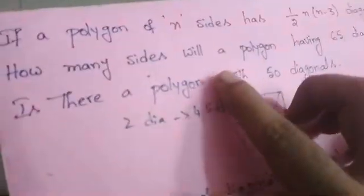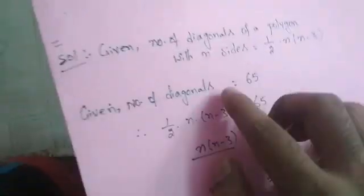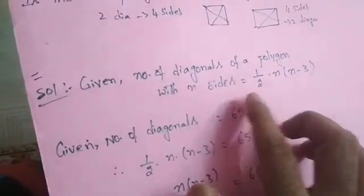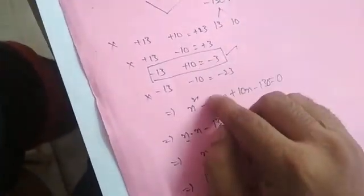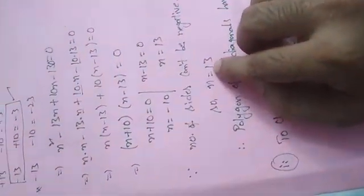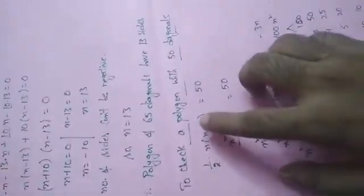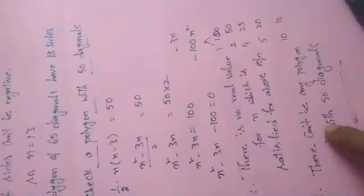To summarize: the problem gave us the formula (1/2) × n × (n-3) for diagonals. For 65 diagonals, solving the quadratic gave n = -10 or n = 13, so n = 13. For 50 diagonals, no valid integer solution exists, so no such polygon is possible.